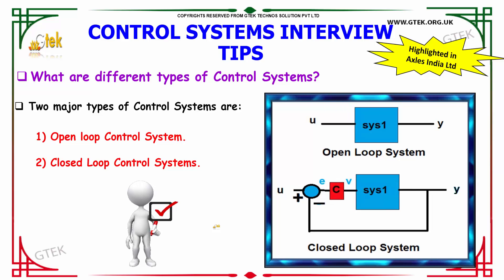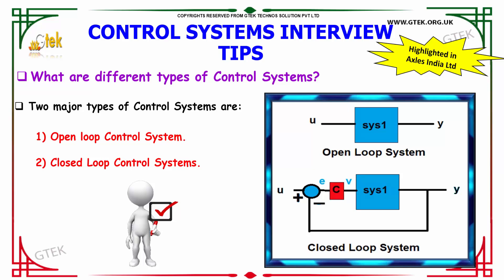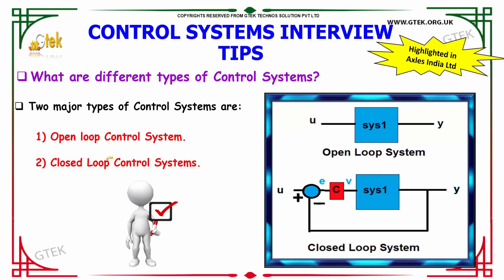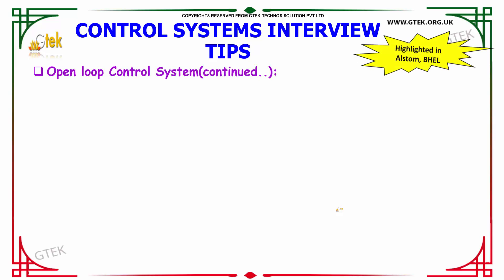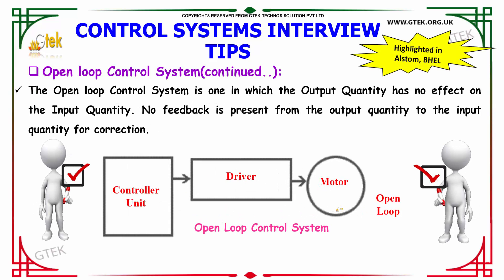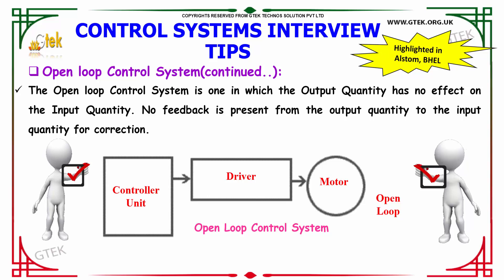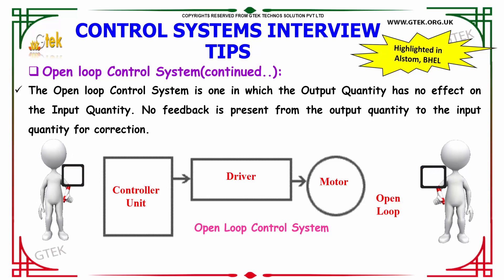What are the different types of control systems? There are two major types: the open loop control system and the closed loop control system. The open loop control system is one in which the output quantity has no effect on the input quantity, and no feedback is present from the output quantity to the input quantity for correction.